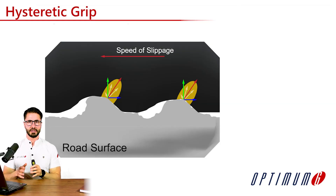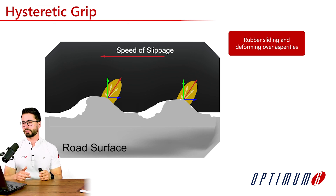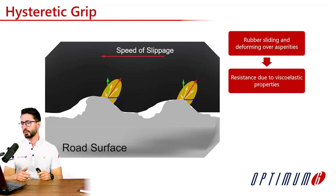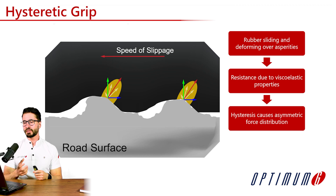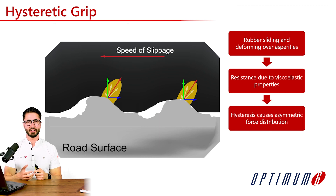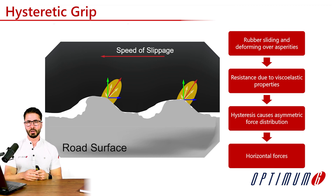The next mechanism we'll study is the hysteretic grip. Here we have the rubber sliding and deforming over the asperities of the asphalt. It will experience some resistance due to its viscoelastic properties. Not only that, but this hysteresis causes an asymmetric force distribution that will then create horizontal forces — lateral or longitudinal — as we'll see in more detail now.